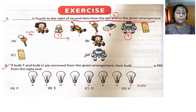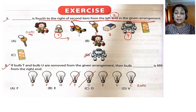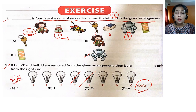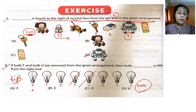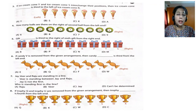Question 2: if bulb T and U are removed from the given arrangement, then which bulb is fifth from the right end? Let's remove U and remove T. In this question, they've written the left end here, so this becomes your right. From the right end: first, second, third — these two are already removed — fourth, and this is your fifth. The answer is V, so option D is correct.